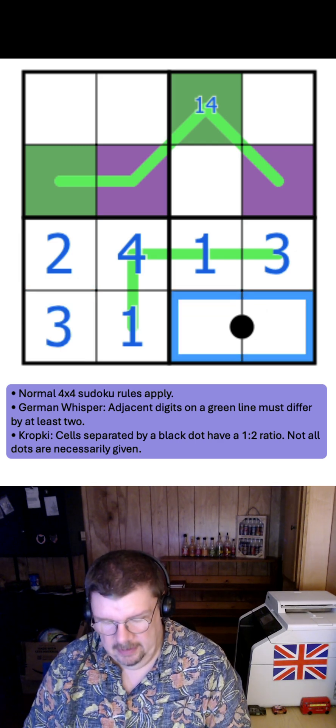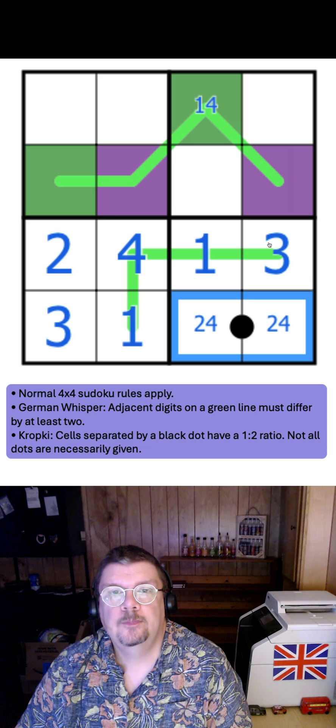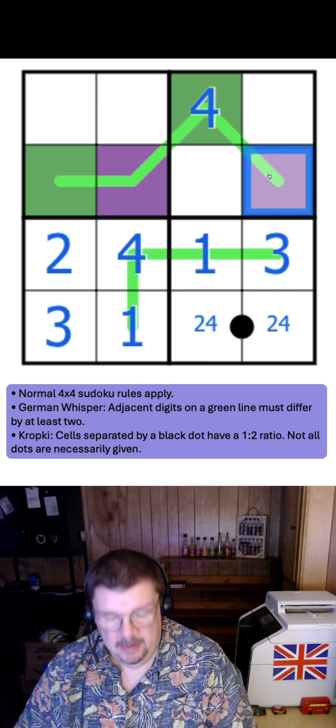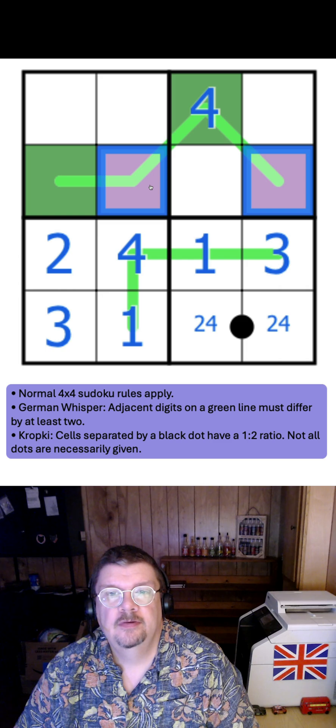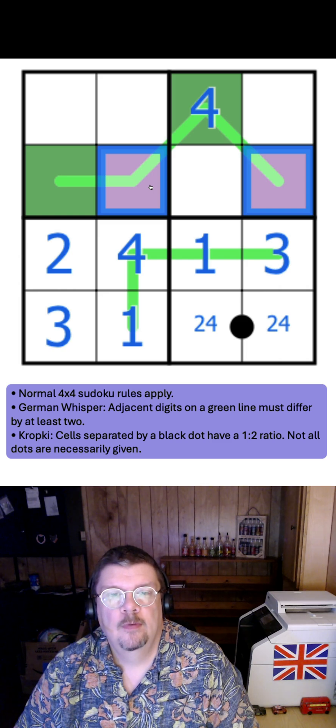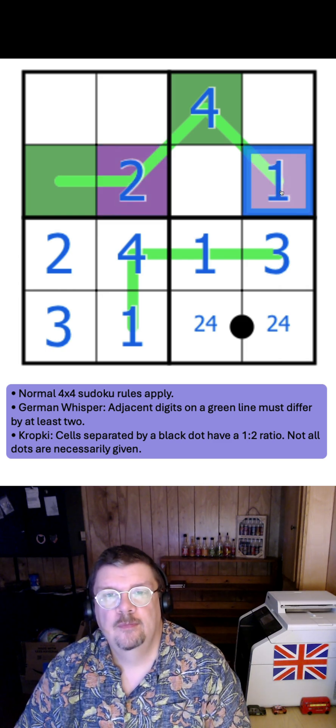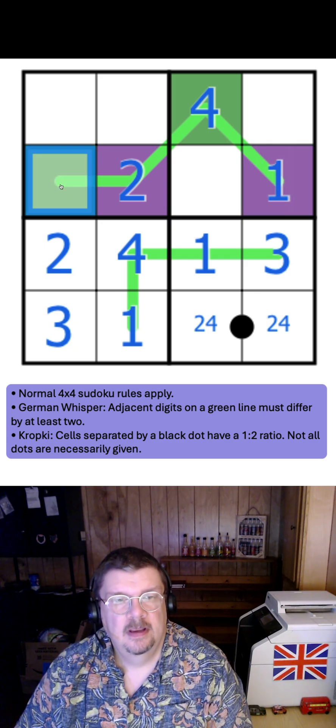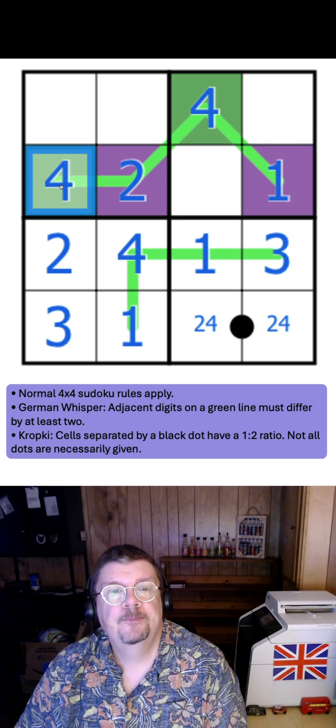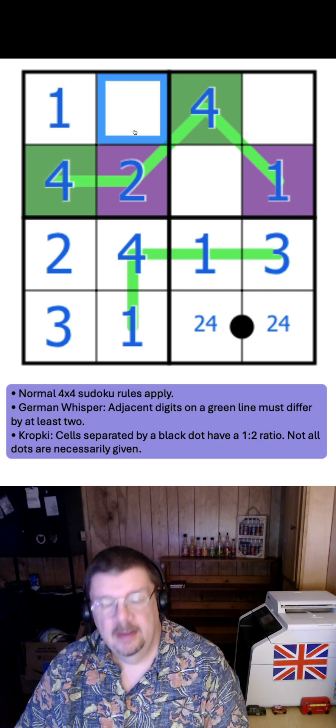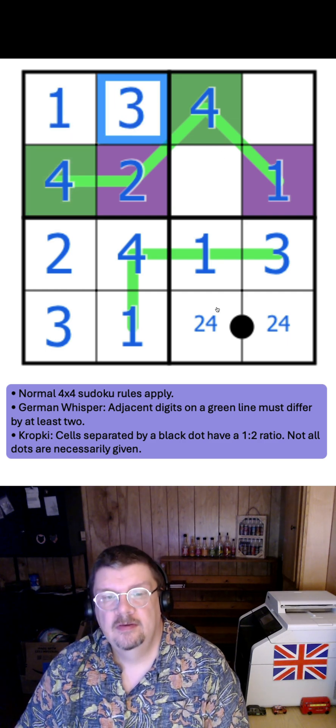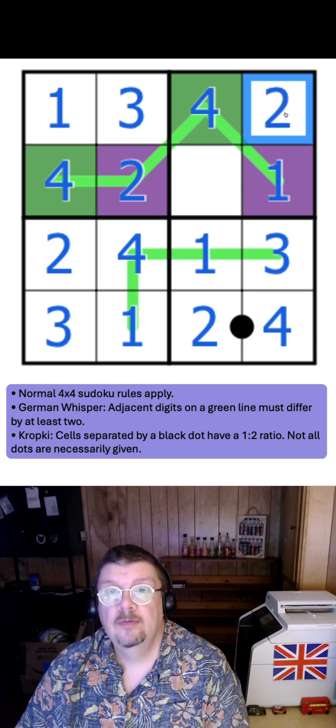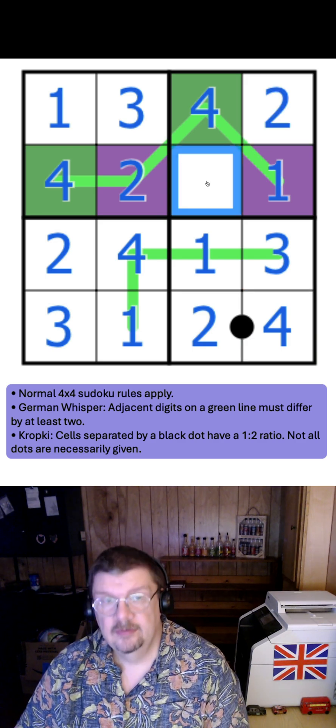This is a 2, 4 pair. This one makes this a 4. These two are low digits, so they are 1 and 2, and we know by Sudoku which way round they go. This is a high digit, and must be a 4. We get a 1 in there, a 3 there. This 4 is also 2 and the 4 down here, and that's a 2. And that is a 3.